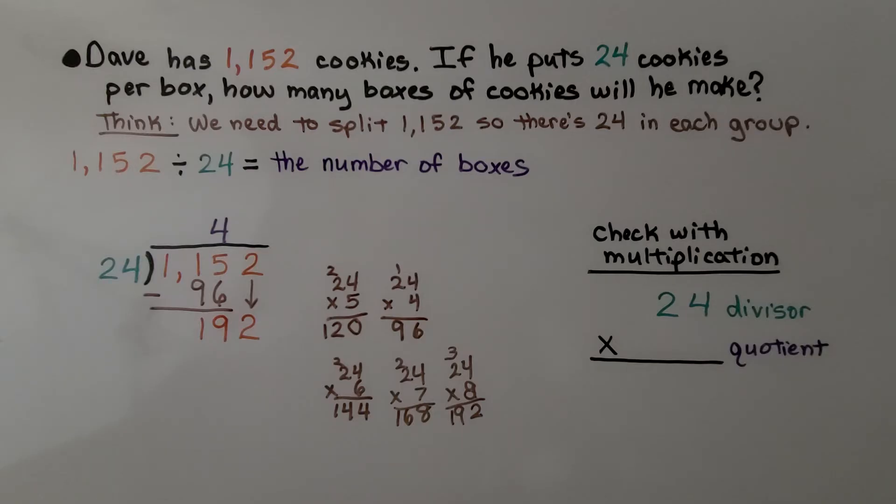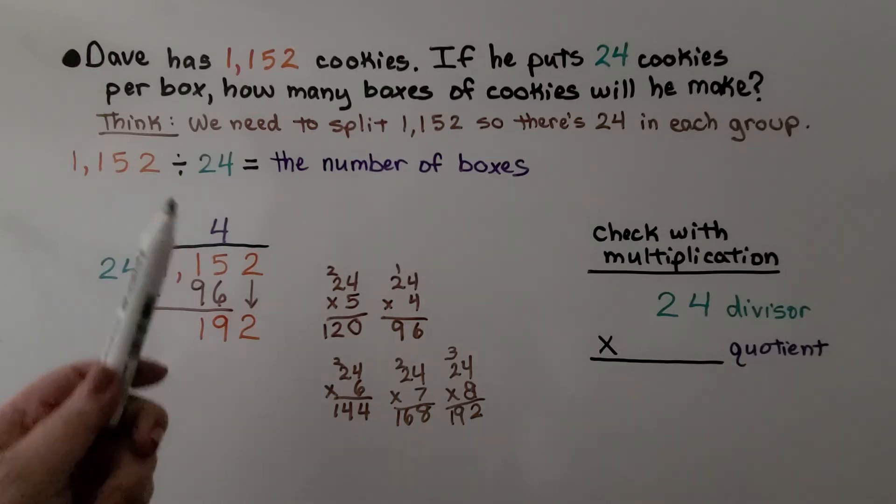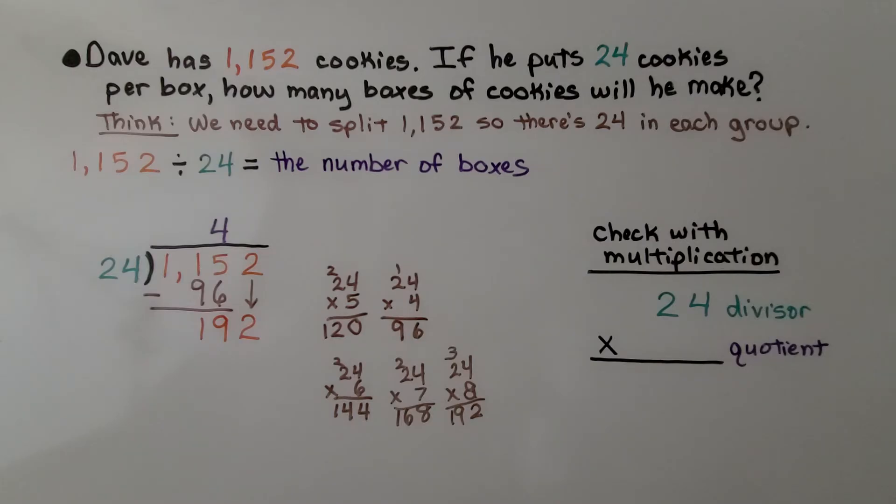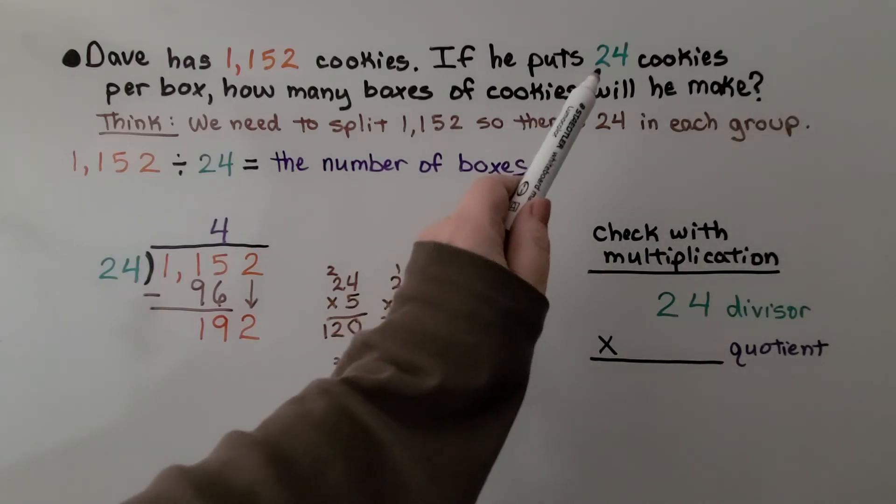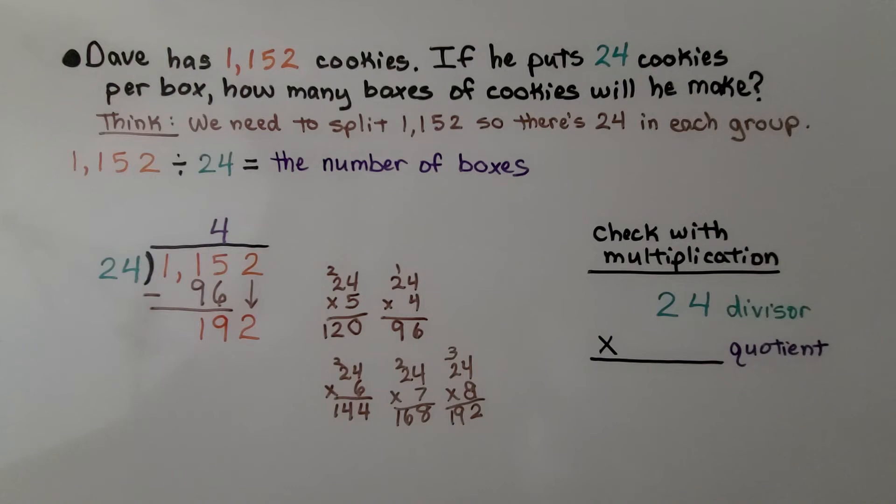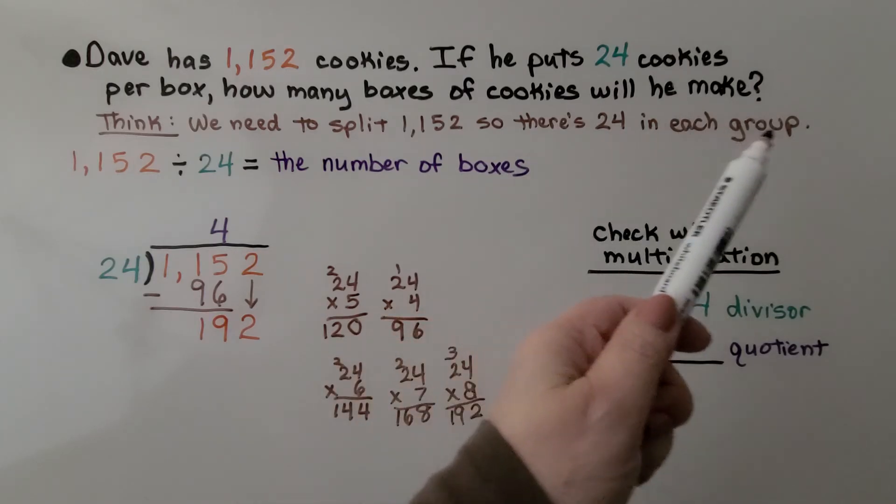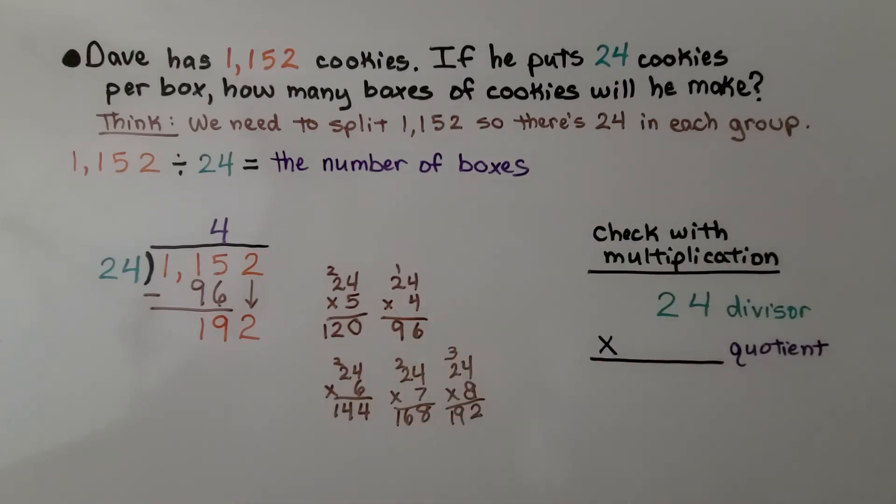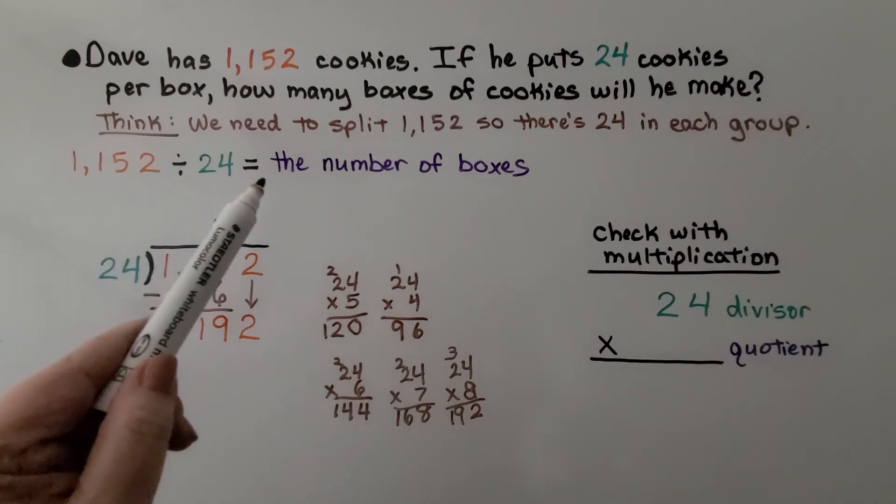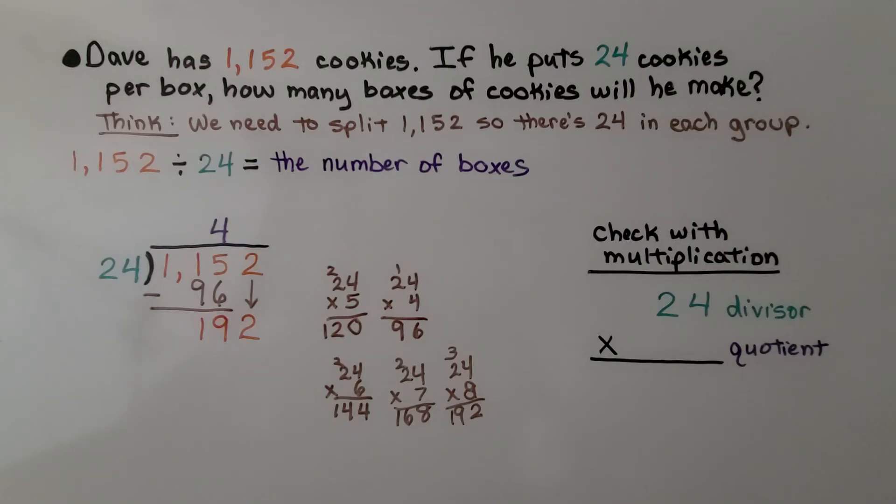Let's try one last example as a word problem. It says Dave has 1,152 cookies. If he puts 24 cookies per box, how many boxes of cookies will he make? We need to split 1,152 so there's 24 in each group. We're going to do 1,152 divided by 24, and that's going to equal the number of boxes he can make.